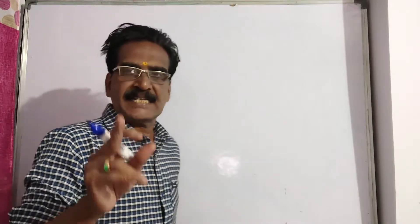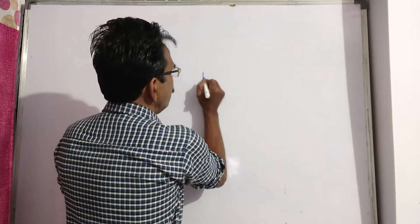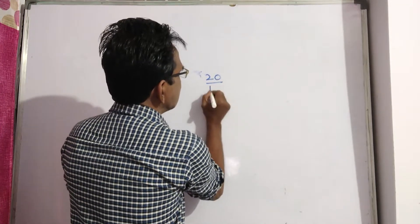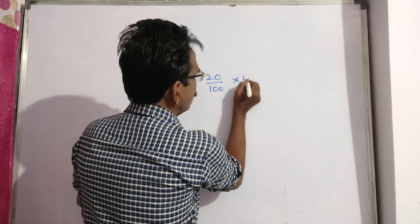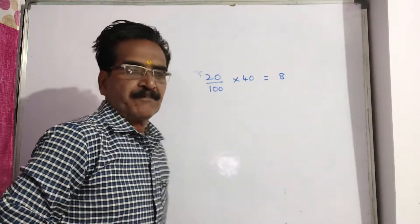Friends, here the price is increased by 20%. So what is 20% of 40? This is equal to 8 rupees.